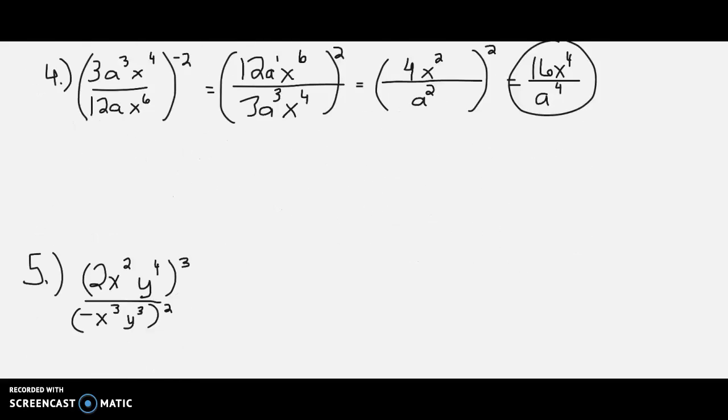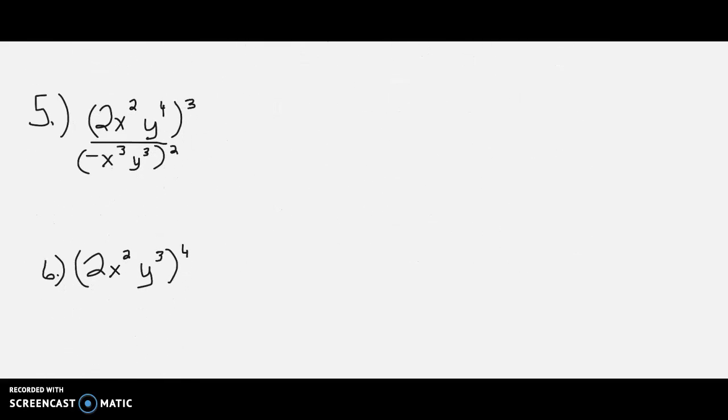Let's look at a few more. Numbers 5 and 6 here. Number 5, we have a 2x squared y to the 4th on the top. That's being raised to the 3rd. A negative x to the 3rd, y to the 3rd, all being raised to the 2nd power in the denominator. Let's take care of the numerator and denominator separately.